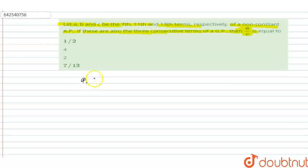Given that a, b, and c are the 7th, 11th, and 13th terms of an AP. Let us consider the first term of the AP is A and the common difference is d, which is not equal to 0.